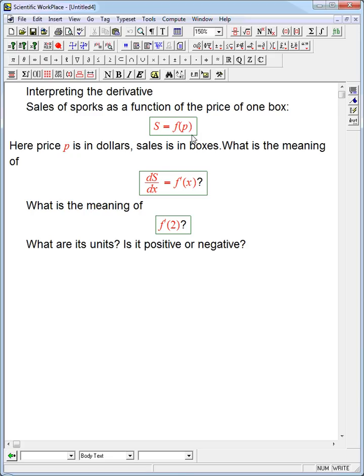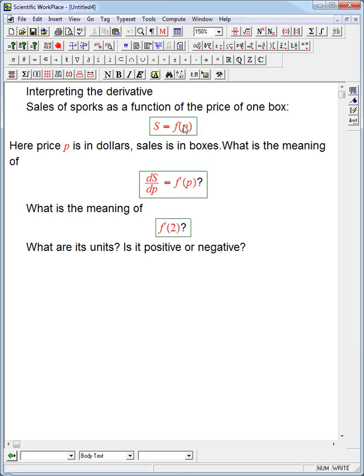So s is a function of p. We've got the output s, the input p, and the function is called f. And we'd like to ask, what if we took the derivative? This is a p, and that's a p. We can either think of that with the notation of f prime of p, or we can use this very suggestive notation ds/dp. What is the meaning of that?